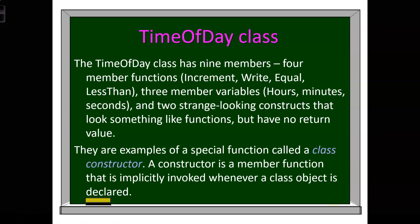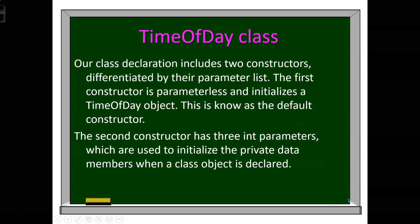The TimeOfDay class has nine members: four member functions — increment, write, equal, and less than — three member data variables — hours, minutes, and seconds — and two constructors, which are special functions that have no return value. A constructor is a member function that is implicitly invoked whenever a class object is declared. Our class declaration includes two constructors differentiated by their parameter list. The first constructor sets hours, minutes, and seconds all to zero. The second constructor has a parameter list where we can initially set hours, minutes, and seconds to some value.